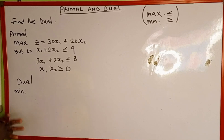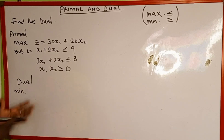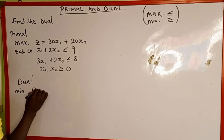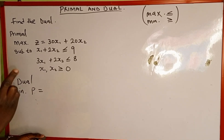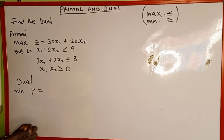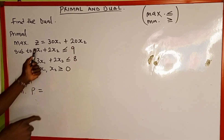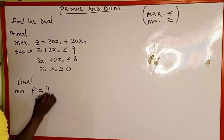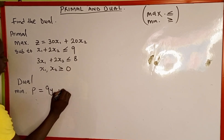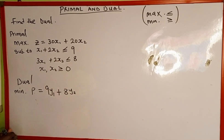Now we are going to find the objective function. The objective function given in the primal is Z equals 30x1 plus 20x2. We are going to use a different variable to represent the objective function of the dual — let's use variable P. We form two new variables because we are given two equations. Our focus is on the right-hand side values: the first is 9 and the second is 8. So the dual objective function is P equals 9y1 plus 8y2.